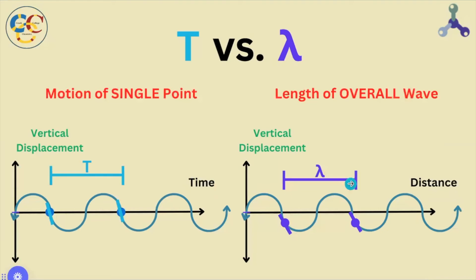While the wavelength graph measures the overall horizontal propagation, the forward progress of the entire length of the wave, period is mapped on a graph tracking the vertical motion of a single point along the wave over time.